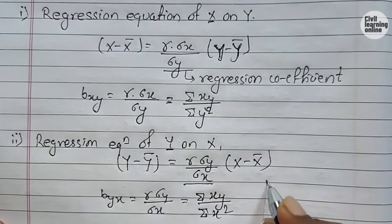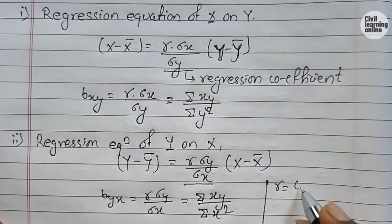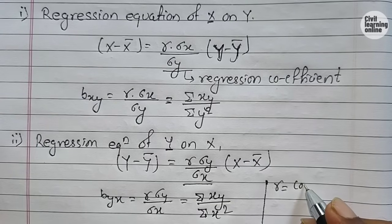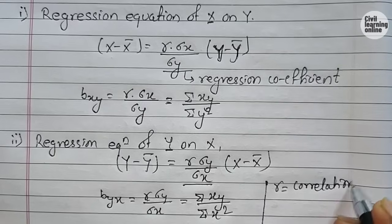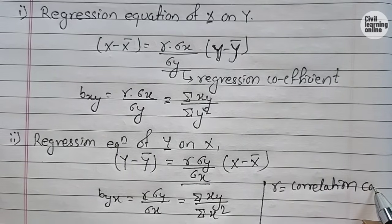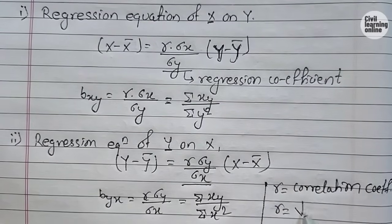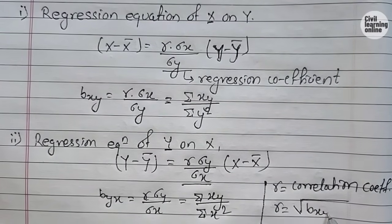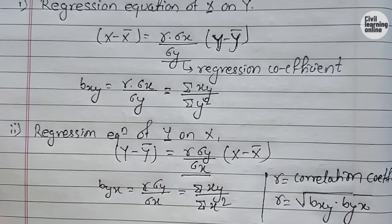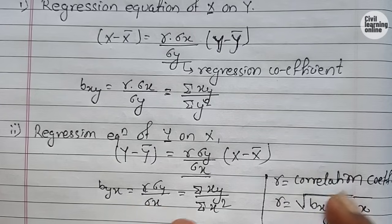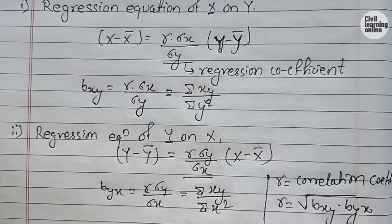Here comes one more coefficient — that is the correlation coefficient, denoted by small r. The correlation coefficient r is given by: r equals the square root of (bxy times byx). Now after getting the introduction about the regression equations, let's solve the numerical.